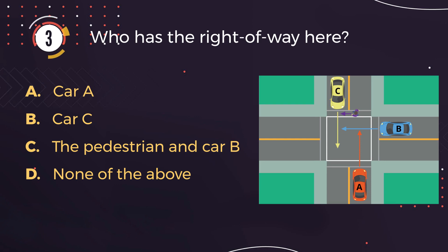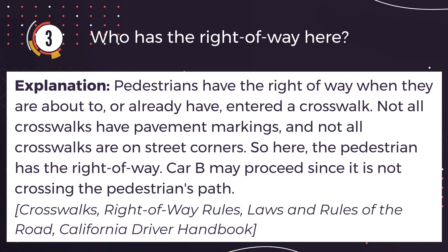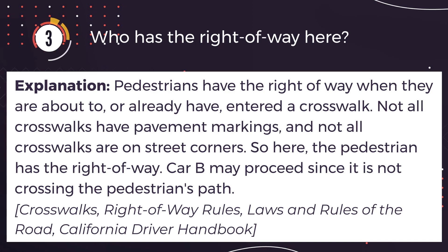The correct answer is C: The pedestrian and car B. Explanation: Pedestrians have the right of way when they are about to, or already have, entered a crosswalk. Not all crosswalks have pavement markings, and not all crosswalks are on street corners. So here, the pedestrian has the right of way. Car B may proceed since it is not crossing the pedestrian's path.